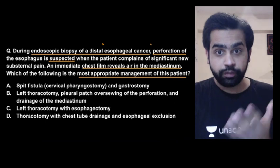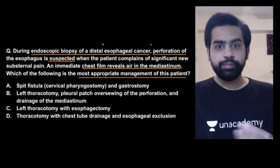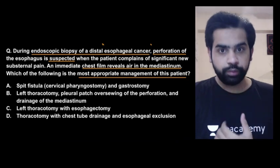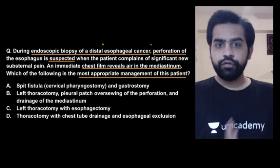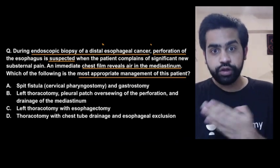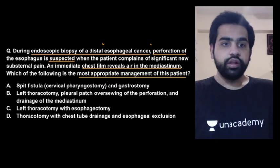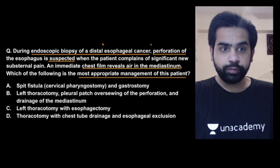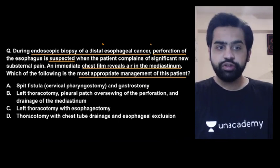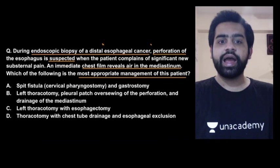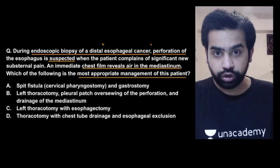To summarize: a patient went for upper GI endoscopy with biopsy for esophageal carcinoma. During the procedure there was a perforation; post-operatively the patient complained of substernal pain, and an X-ray confirmed the perforation. The options are: a spit fistula with pharyngostomy and gastrostomy; left thoracotomy with pleural patch, oversewing, and mediastinal drainage; left thoracotomy with esophagectomy; or thoracotomy with chest tube drainage and esophageal exclusion.